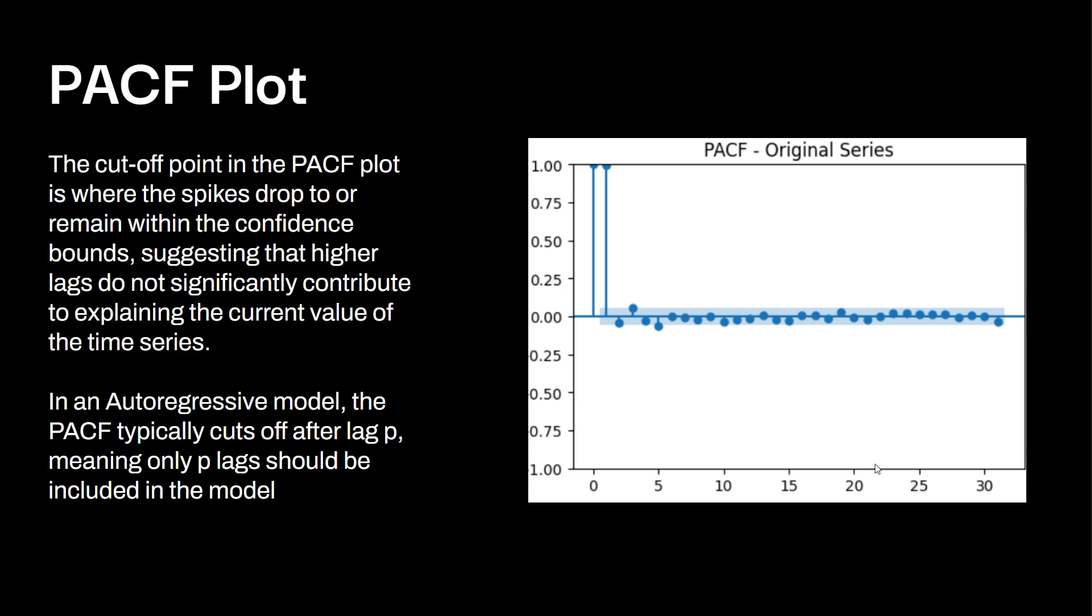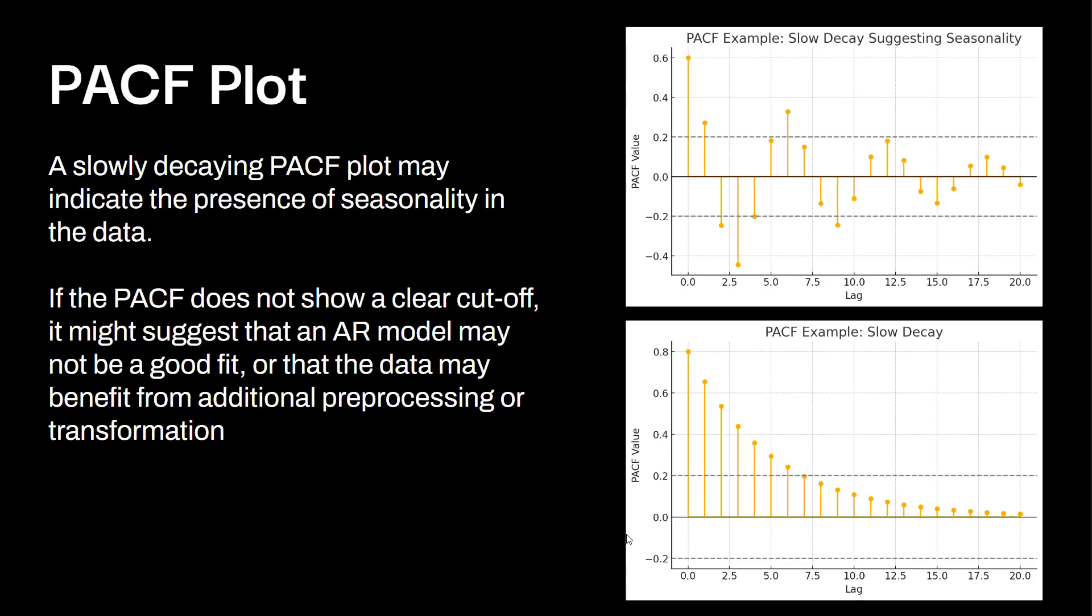In an autoregressive model, the PACF typically cuts off after lag P, meaning only P lags should be included in the model. You can see right over here, there's a sharp drop off right after lag one. Some of these look like they're close on the border, but they're all within this confidence interval. A slow decaying PACF plot may indicate the presence of seasonality in the data. This would be an example of a slow decay. And if the PACF does not show a clear cutoff, it might suggest that the AR model may not be a good fit, or the data still needs to benefit from additional preprocessing or transformation. This would be an example of that. Data is all over the place in this instance. It's not stationary.